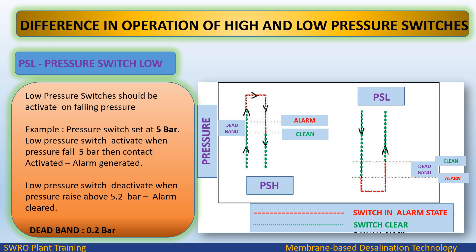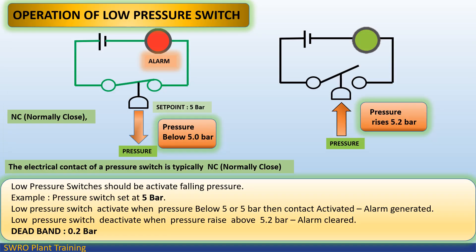Operation of a low pressure switch. Low pressure switches should activate on falling pressure. Example: pressure switch set at 5 bar. The low pressure switch activates when pressure falls to 5 bar — contact is activated and alarm is generated. The low pressure switch deactivates when pressure rises above 5.2 bar and the alarm is cleared. Dead band: 0.2 bar. The electrical contact of a low pressure switch is typically NC (normally closed).